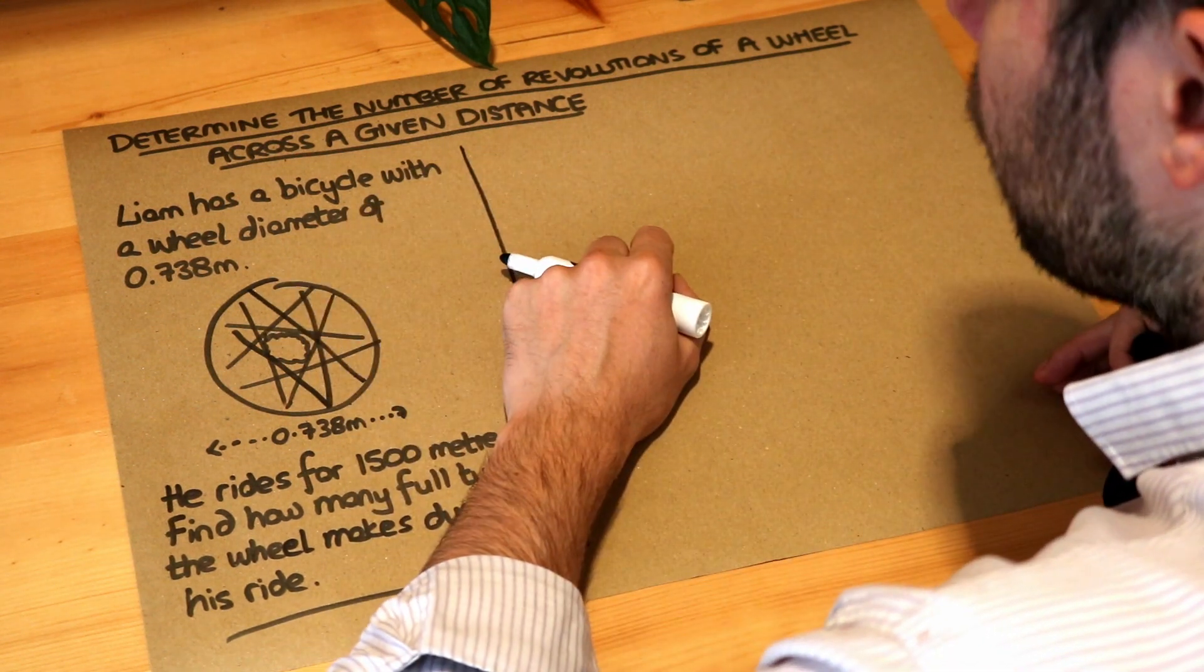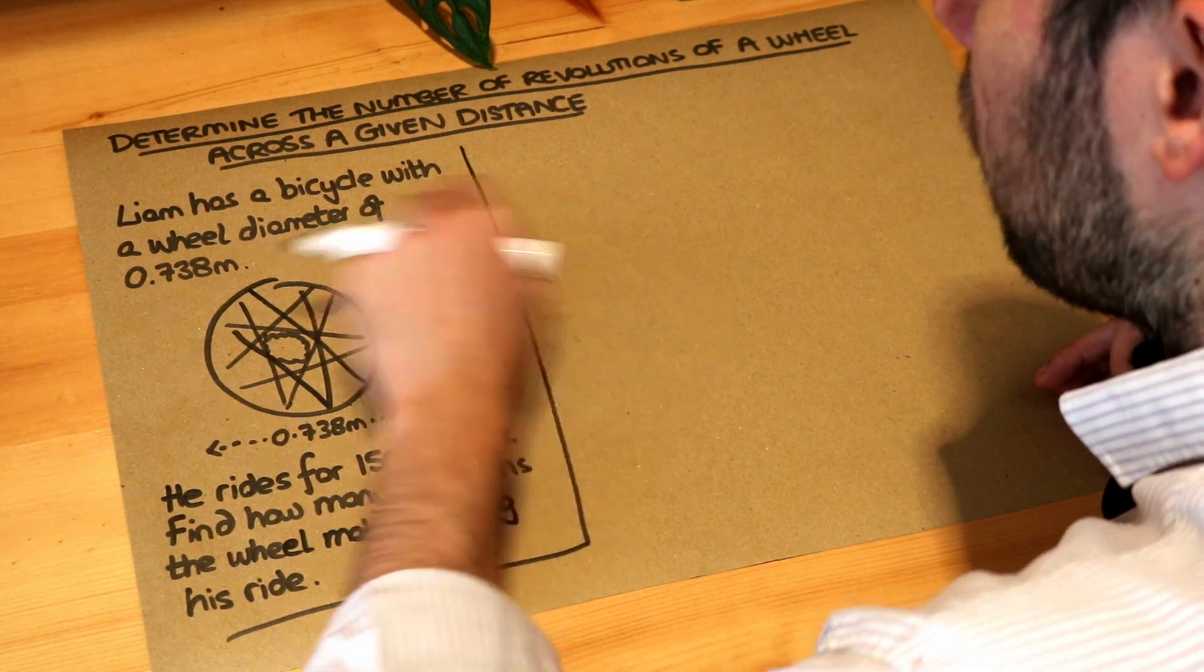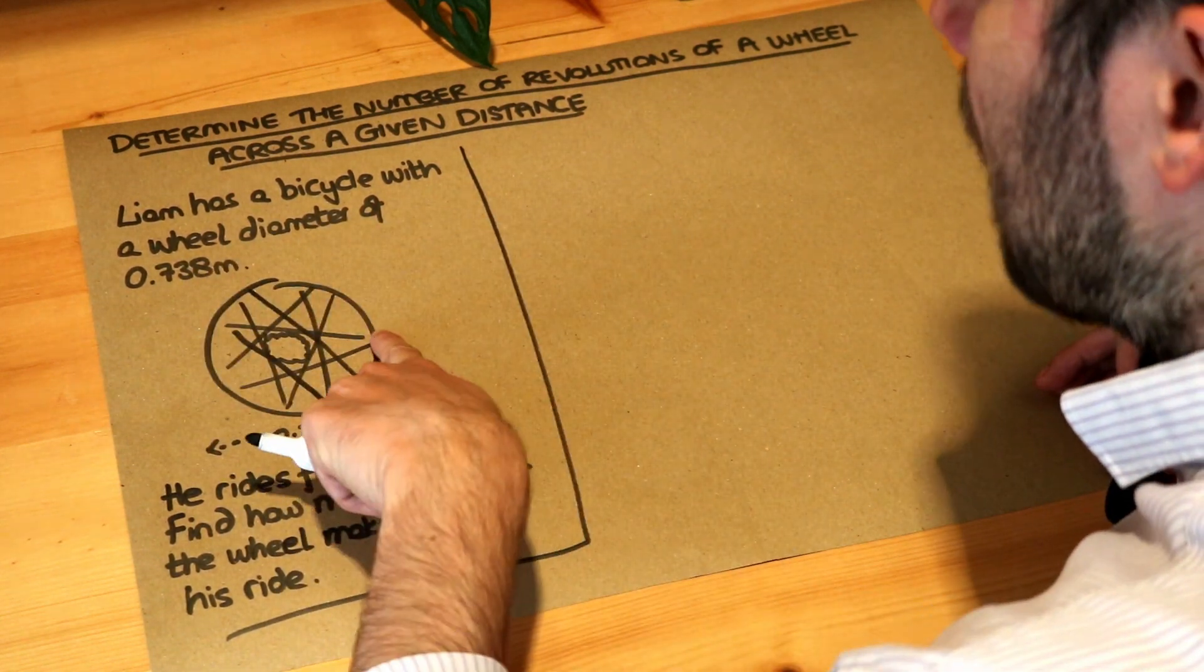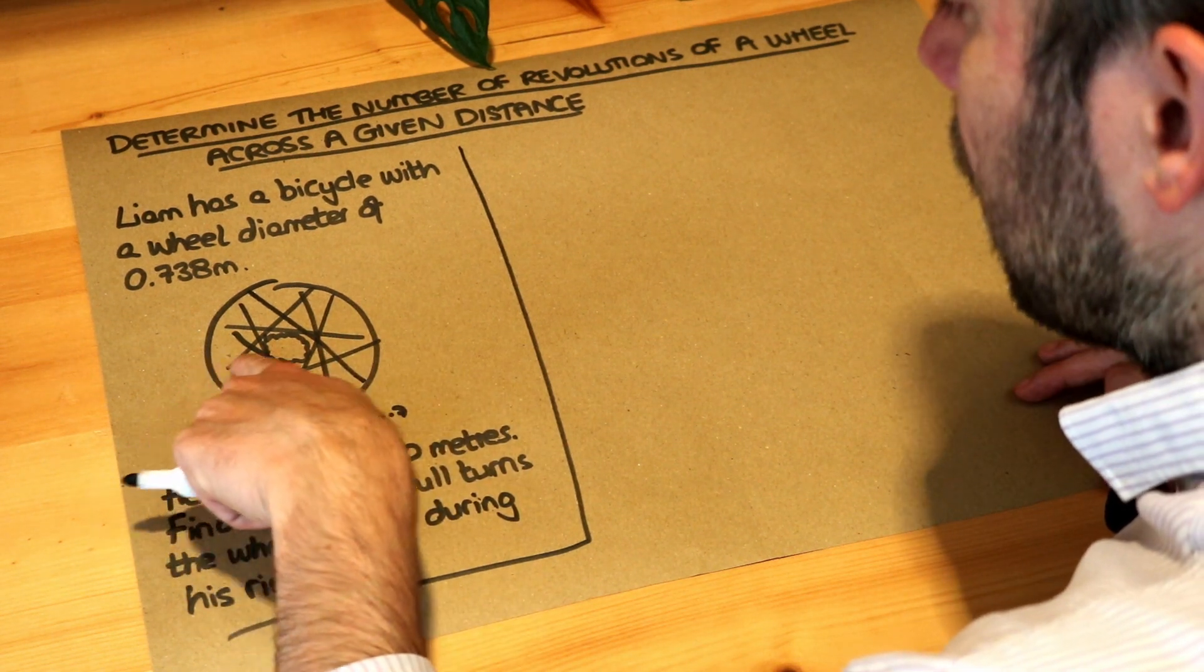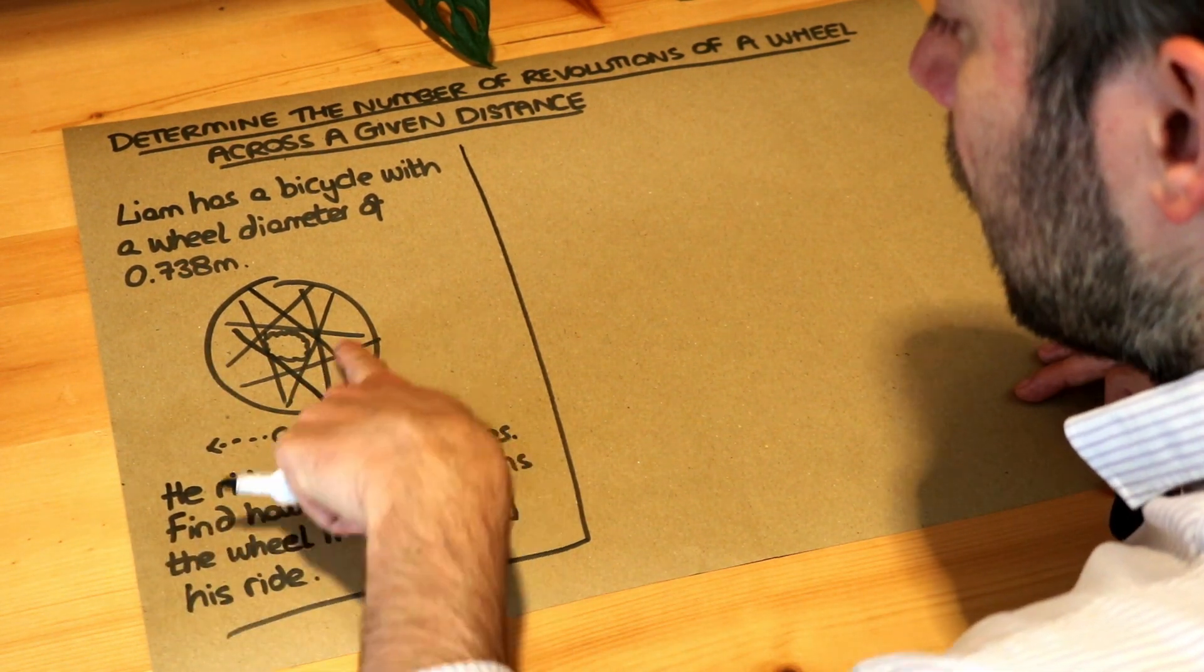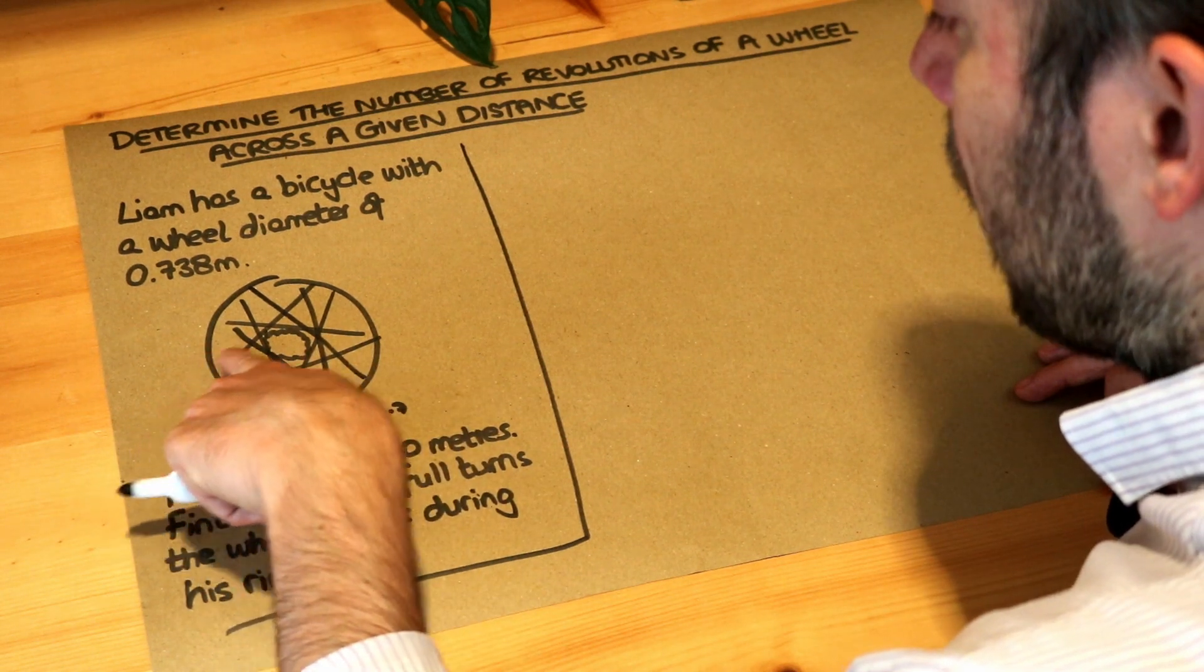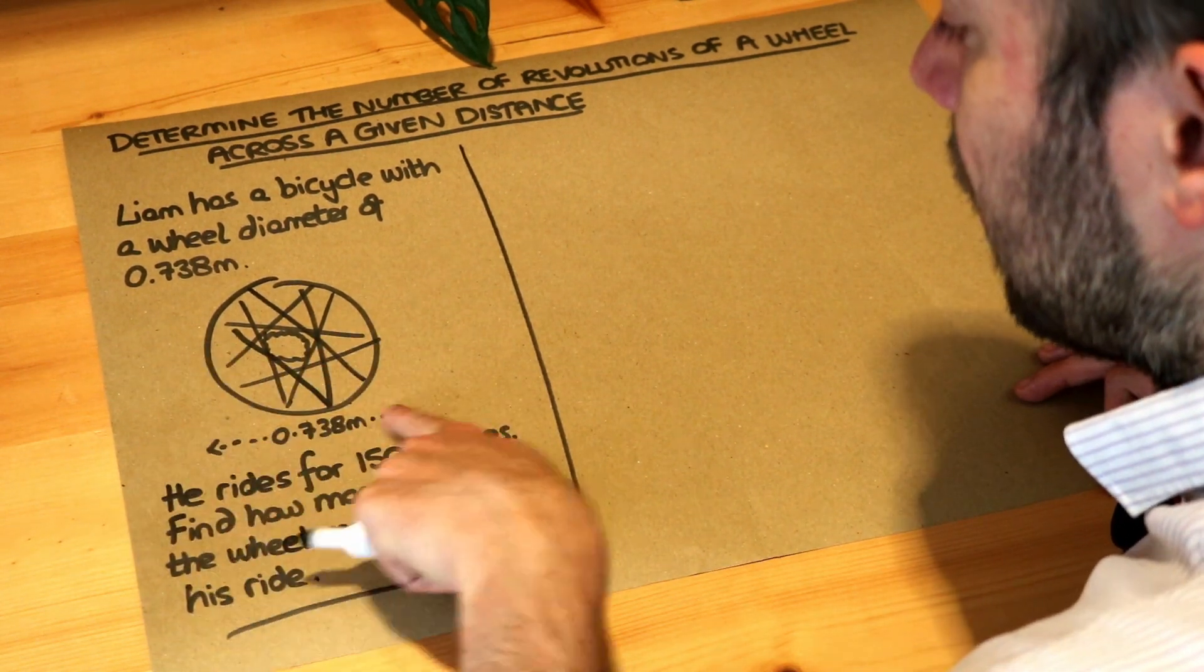Liam has a bicycle with a wheel diameter of 0.738 centimeters. Remember the diameter of a circle is from one end of the circle to the other. So it's the length of the line from one end of the circle to the opposite end. So you can see it labeled here.